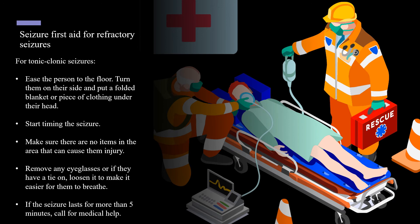If someone with refractory epilepsy has a tonic-clonic seizure, ease the person to the floor. Turn them on their side and put a folded blanket or piece of clothing under their head. Start timing the seizure and make sure there are no items in the area that can cause injury. Remove any eyeglasses or, if they have a tie on, loosen it to make it easier for them to breathe. If the seizure lasts for more than five minutes, call for medical help.